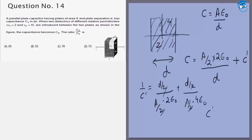So C dash comes out to be 4 A epsilon 0 by 3 D. So we can put this here: 4 A epsilon 0 by 3 D plus these two cancel, A epsilon 0 by D. So we get 7 A epsilon 0 by 3 D.